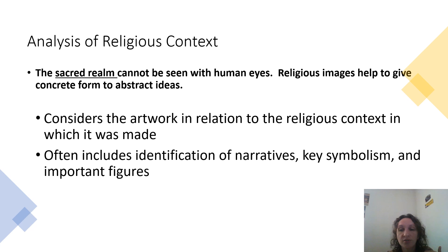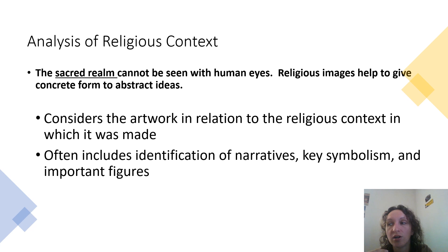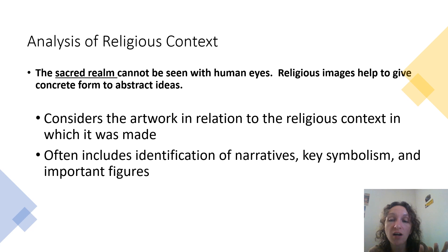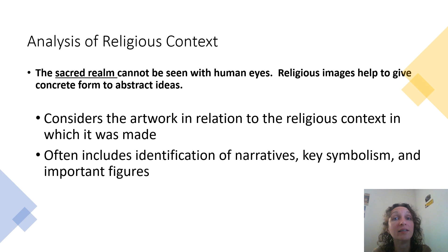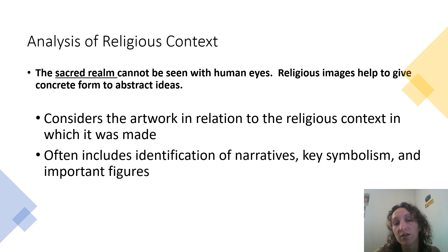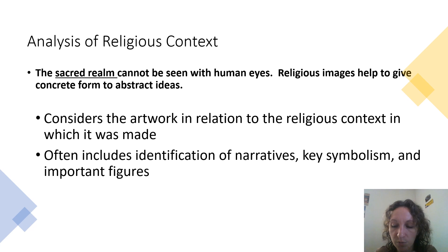Next is analysis of religious context. In this class I'll use the term 'sacred realm' as an umbrella term referring to things that cannot be seen with human eyes — what we might consider heaven or hell — with abstract ideas attached. Religious context considers a work of art in relation to the context in which it was made, often including narratives, key symbols, and important figures. You need to be familiar with the sacred realm of whatever culture created the work to fully understand it.